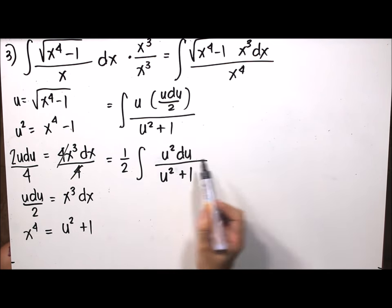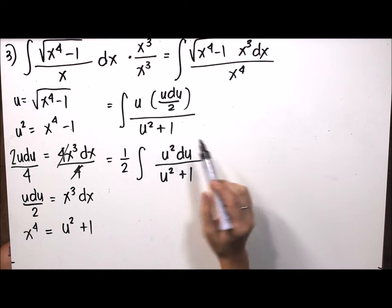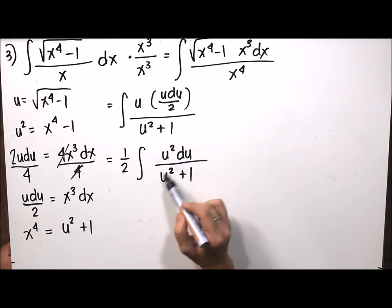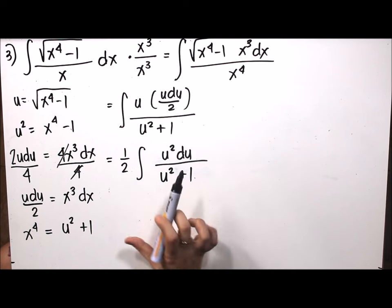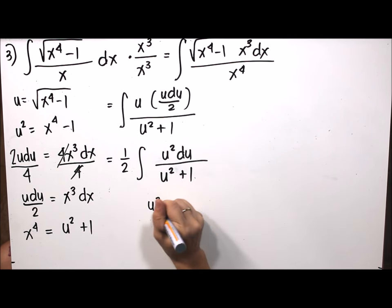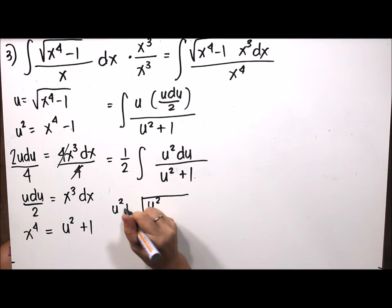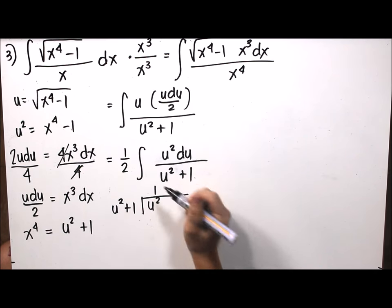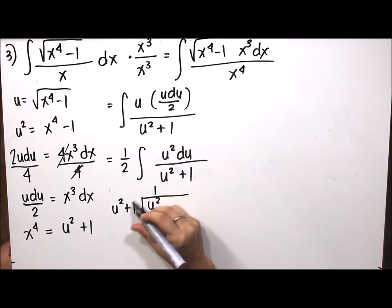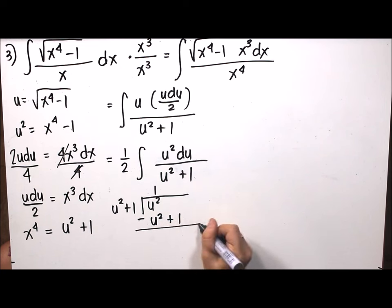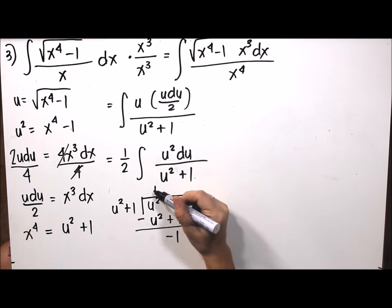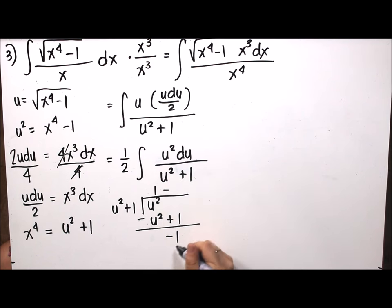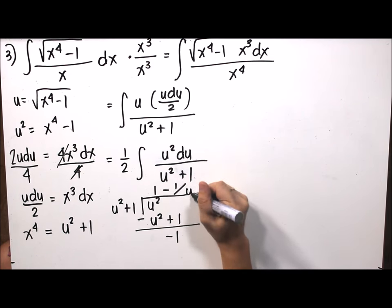Since both numerator and denominator are degree 2, we apply polynomial long division of u squared divided by u squared plus 1. The quotient is 1 with a remainder of negative 1, giving us 1 minus 1 over u squared plus 1. Therefore the integral becomes one-half times the integral of 1 minus 1 over u squared plus 1, du.